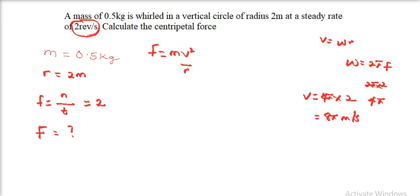So v equals 4 pi times r, which is 2, so that is 8 pi meters per second. Now we can bring this down here. m is 0.5 multiplied by v, which is 8 pi, all squared over r, and then the r is 2.